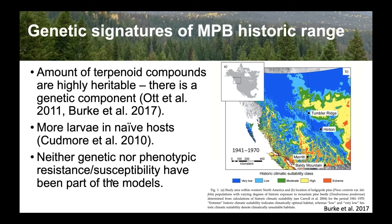Defense compounds like terpenoids differ between historic and novel ranges, and that difference is heritable. More larvae are produced in naive hosts than in co-evolved or historic hosts. Both of these findings support that climate modeling is doing a fairly decent job of telling us where the historic range of mountain pine beetle is.